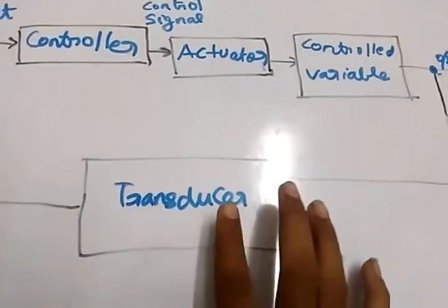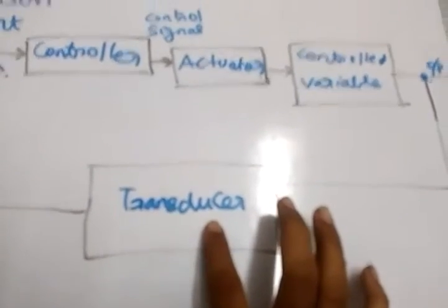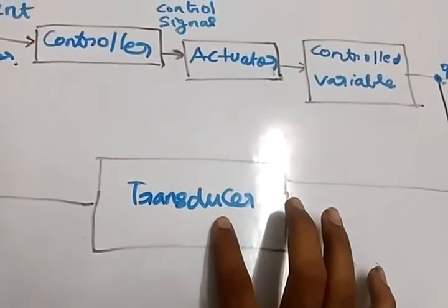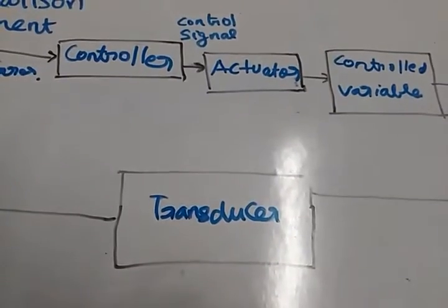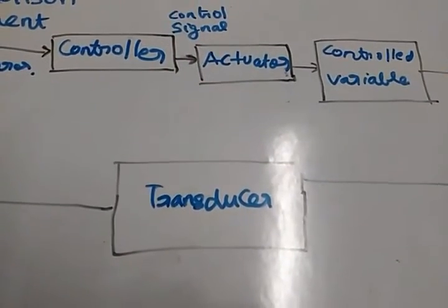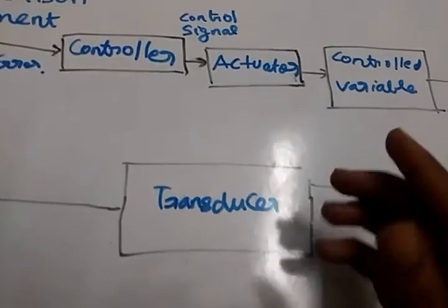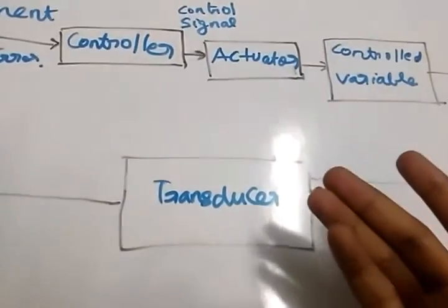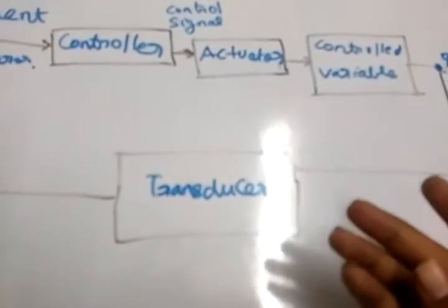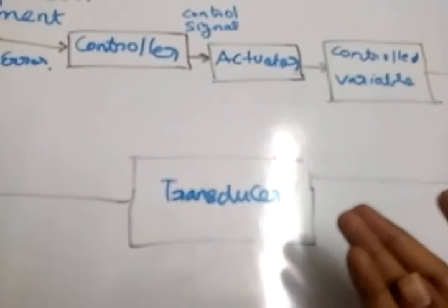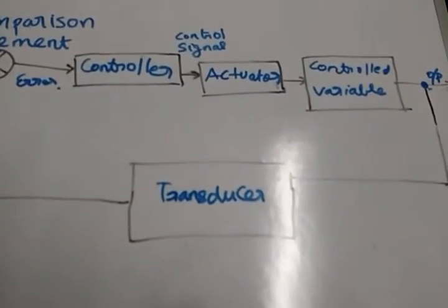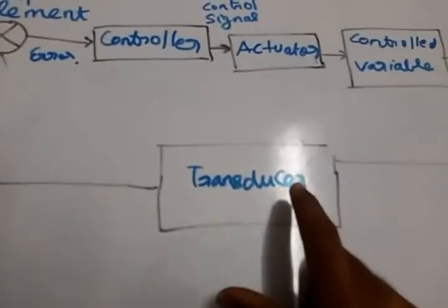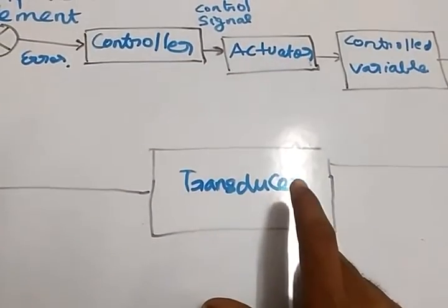So then what happens? The sensor, we also say that sensor is also known as transducer. Because transducer is a unit that converts one form of energy into another form. So here a sensor is also going to do the same thing. So we could call a sensor generally a transducer. So now what happens? The sensor has detected there is some error in the system.